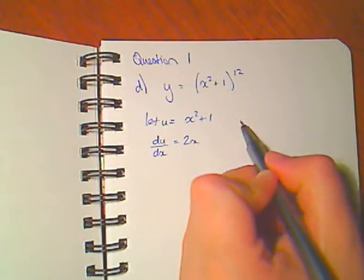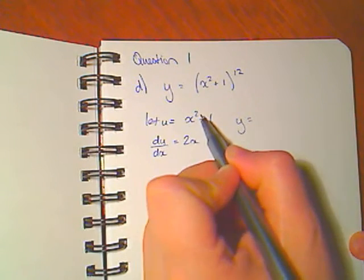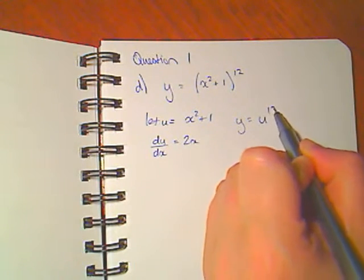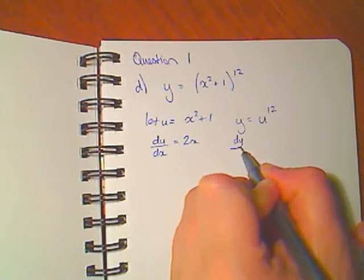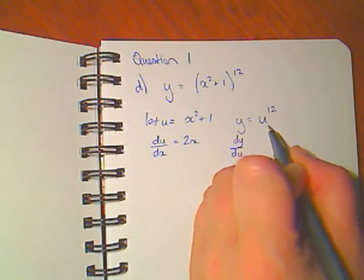I can rewrite y then as a function that uses my substitution of u to the 12th. And then I can find the derivative of y with respect to u, dy/du.